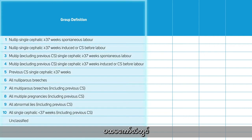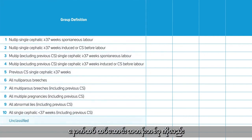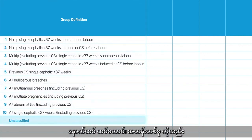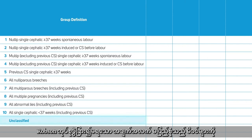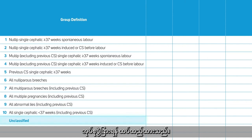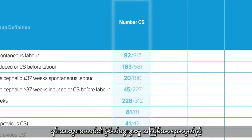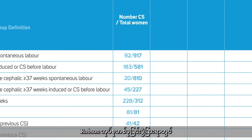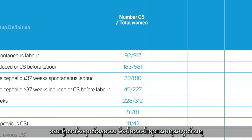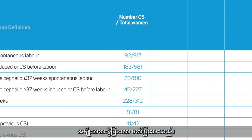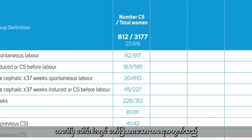The first column shows each of the ten groups and their definitions. An additional row is added to show the women who cannot be classified because information on any of the variables was missing. The second column displays the number of cesarean sections and the number of women classified in each group among all women admitted for birth in the unit. The heading on top shows the totals for the unit.